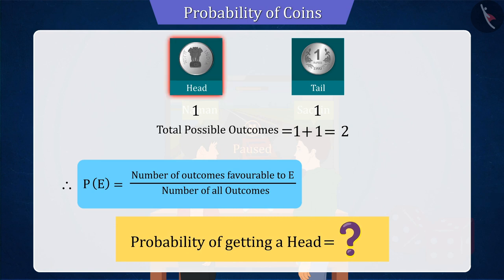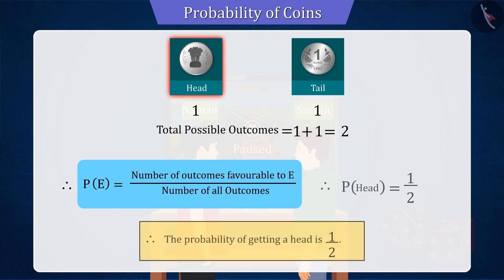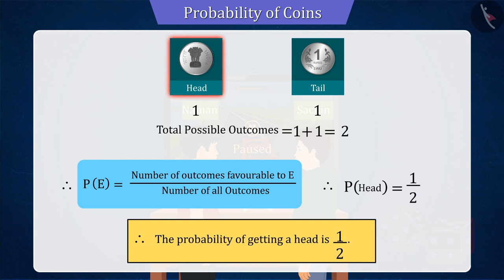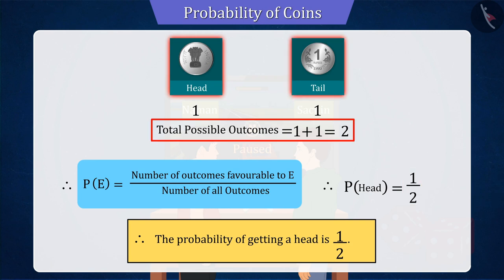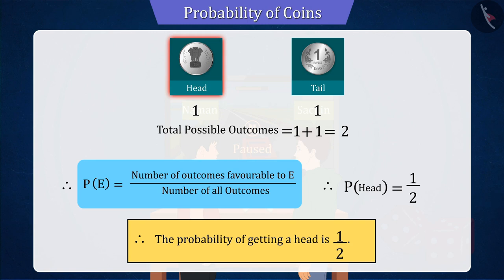Can you now find the probability of getting a head? According to the above statement, the probability of head will also be 1 by 2, since the total number of results is 2 and the possibility of head is only 1.